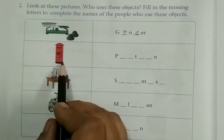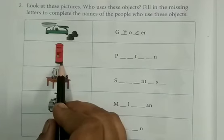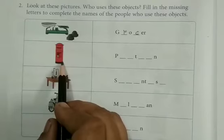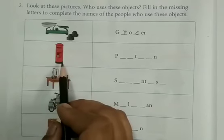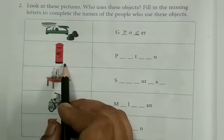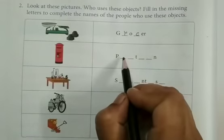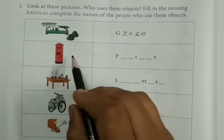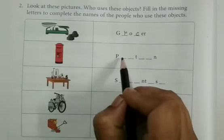Look at this. Yes. This is letter box. So who uses this particular object? Yes. Postman. Postman delivers letters to you. So here we will write postman, P-O-S-T-M-A-N.